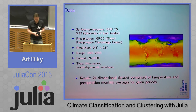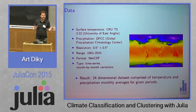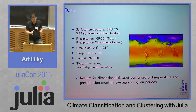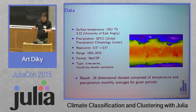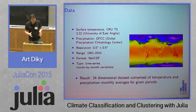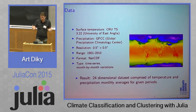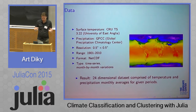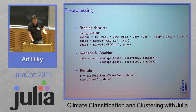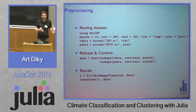What we end up with is 24-dimensional data: the first 12 dimensions are temperature per month, and the next 12 dimensions are precipitation per month. We analyze this high-dimensional data to identify climate zones. All the existing categorization of climate zones is basically just a bunch of hand-picked rules, so we use automated clustering.